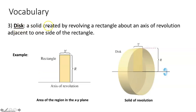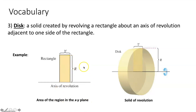Now let's talk about a disk. That would be a solid created by revolving a rectangle about an axis of revolution adjacent to one side of the rectangle. To create a disk, you have a rectangle adjacent on one side to your axis of revolution, and you swing it around that axis, creating this disk. The width of our rectangle is labeled w, and the height is labeled with capital R, because when we revolve the rectangle the disk has a radius equal to the height of our rectangle.